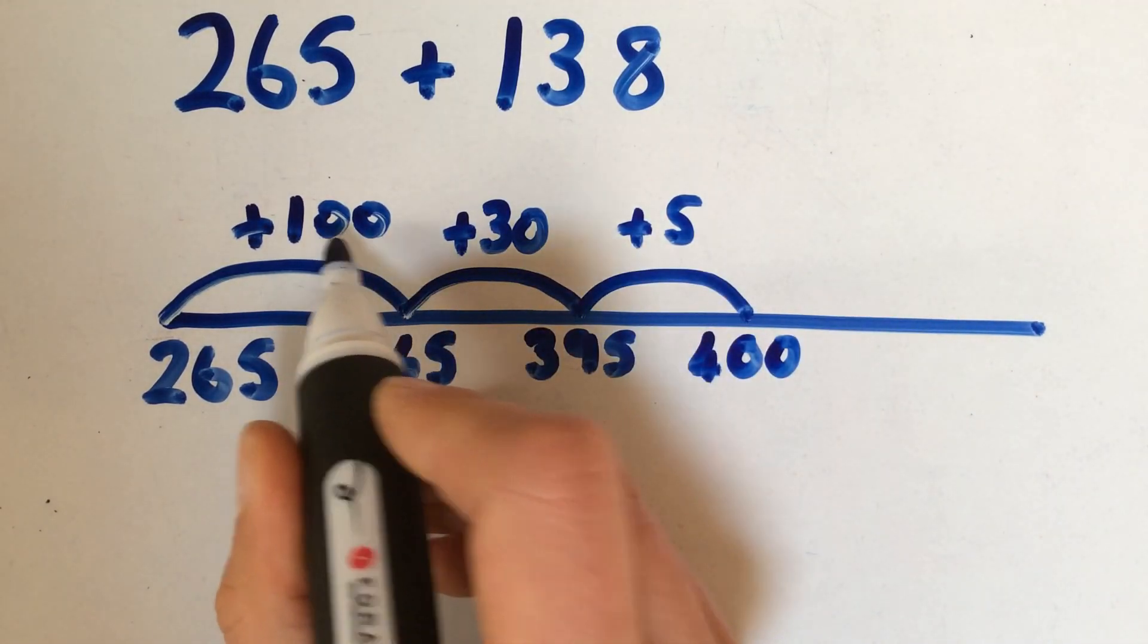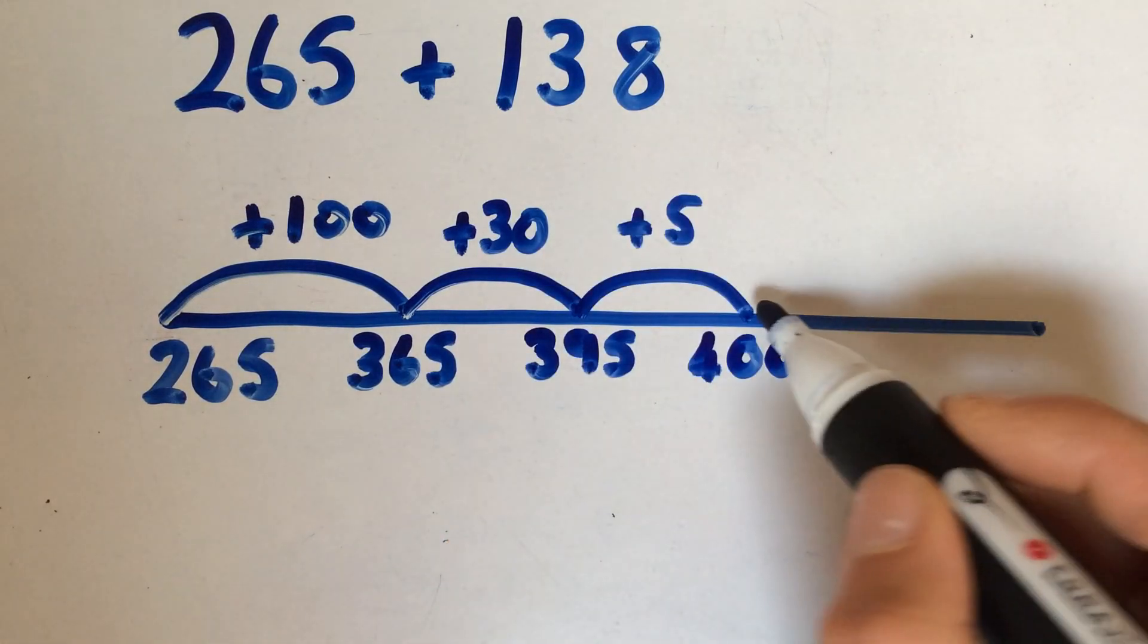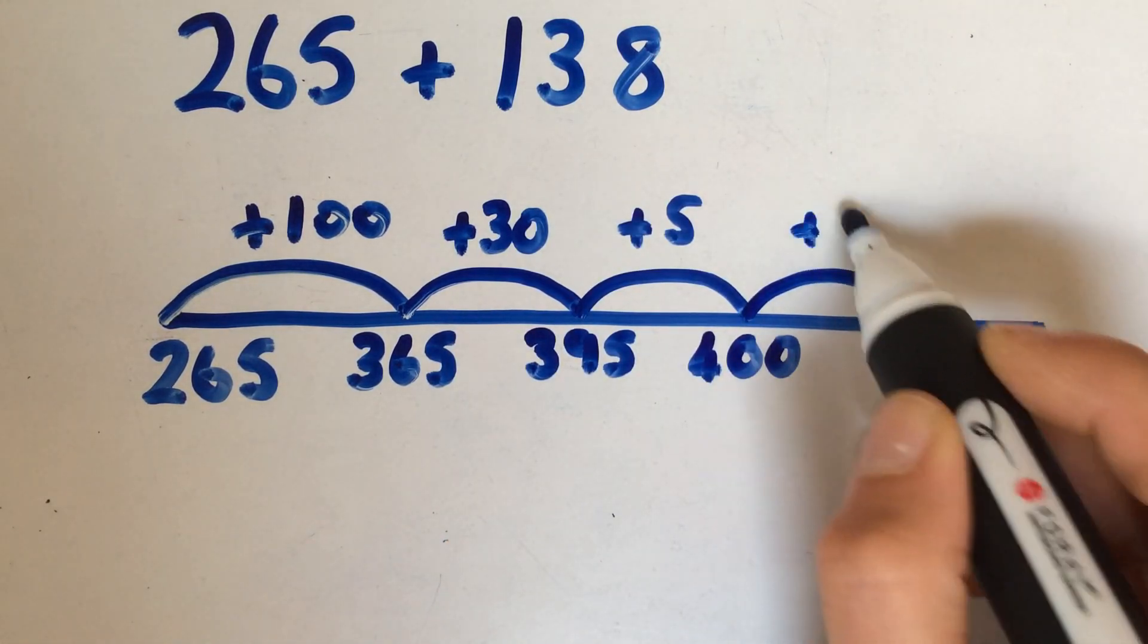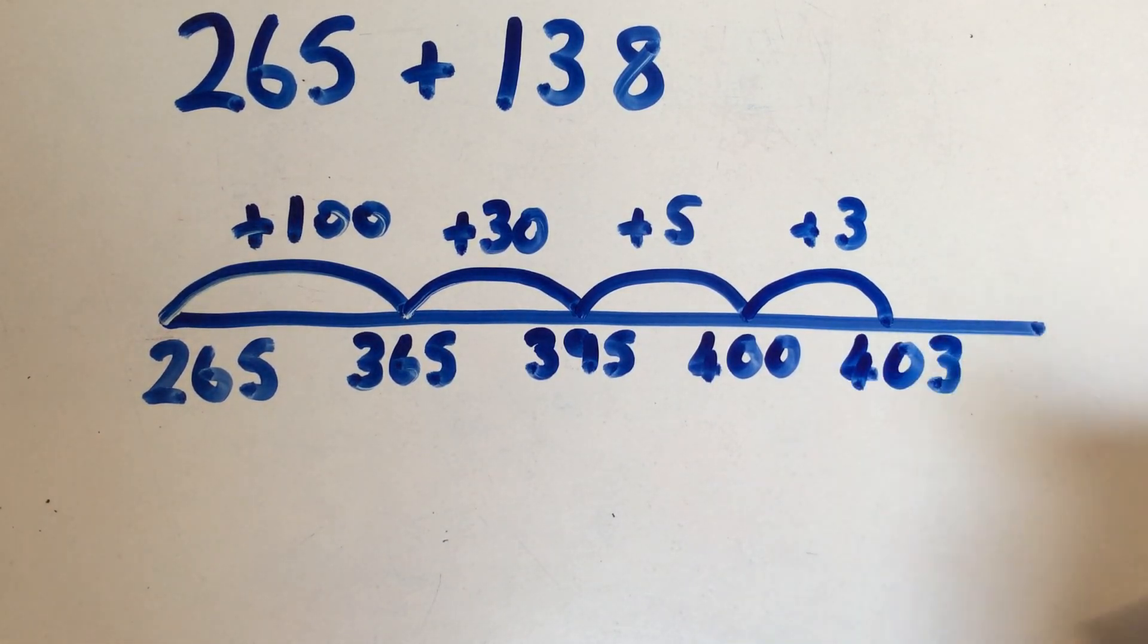You can see here you've added on 135, but you need to add 138, so you've got another 3 that needs to be added, and that takes you up to 403 at the end.